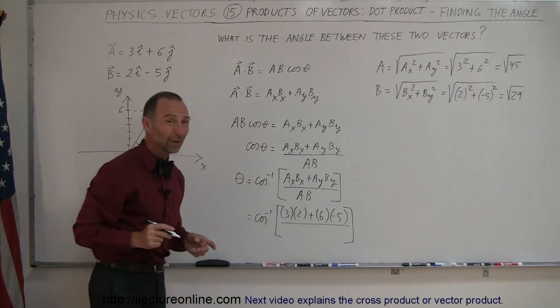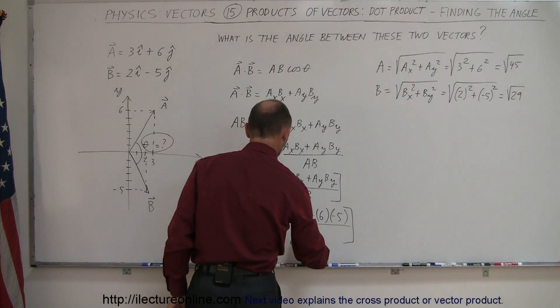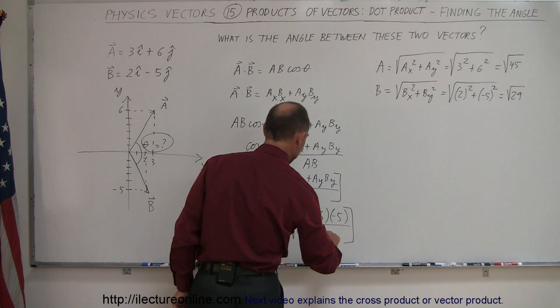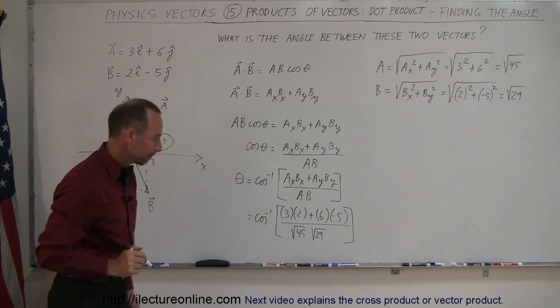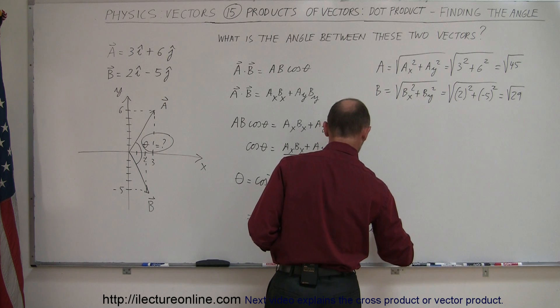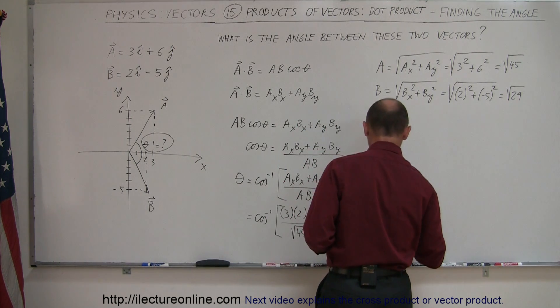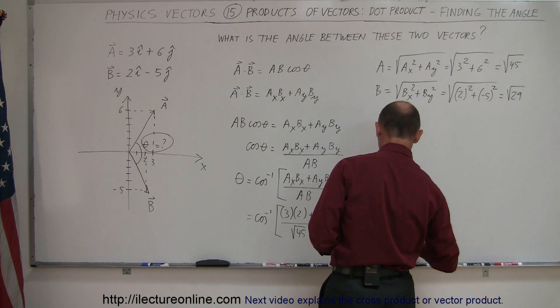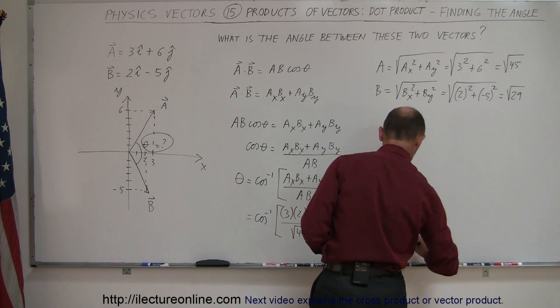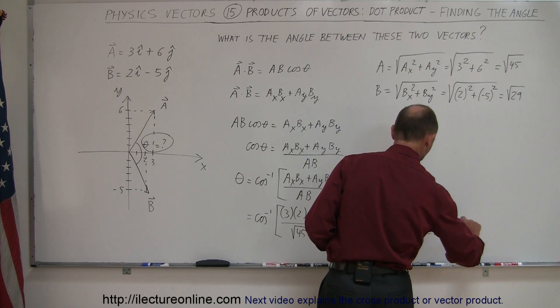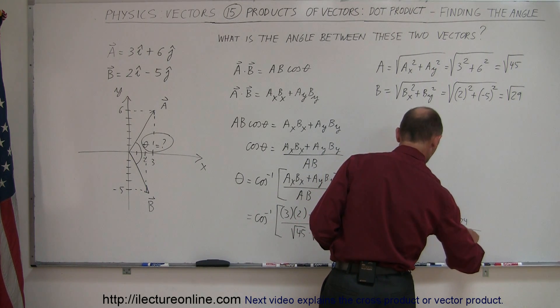Alright, so now we can go ahead and plug those in here. So that would be the square root of 45 times the square root of 29. Okay, what is that equal to? I can simplify this a little bit. It's equal to the arc cosine of 3 times 2, that would be 6, plus 6 times the negative 5 would be minus 30, divided by the square root of 45 times 29. And simplify this a little bit more, that would be the arc cosine of minus 24 over the square root of 45 times 29.